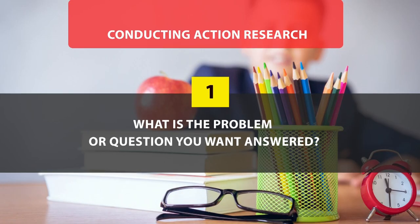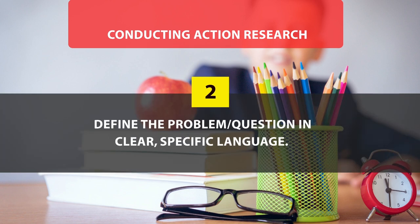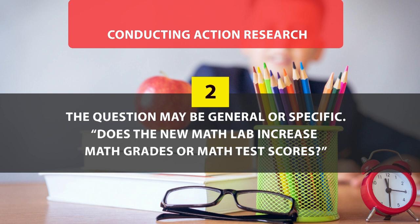The first step is: what is the problem or question you want to answer? Which problem should be answered through action research? Then you define the problem or the question in clear, specific terms. Your question can be general or specific — it does not matter. For example, you can have a question like: does the new math lab increase math grades or math test scores?